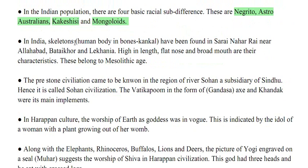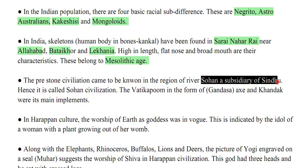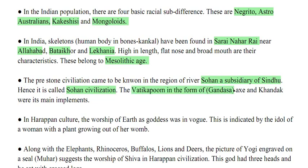In India, skeletons and human bones (Kankal) have been found in Sarai Nahar Rai near Allahabad, Bataikhor, and Lekhania. High length, flat nose and broad mouth are their characteristics — these belong to the Mesolithic age. The pre-stone civilization came to be known in the region of River Sohan, a subsidiary of Sindhu; hence it is called the Sohan civilization.